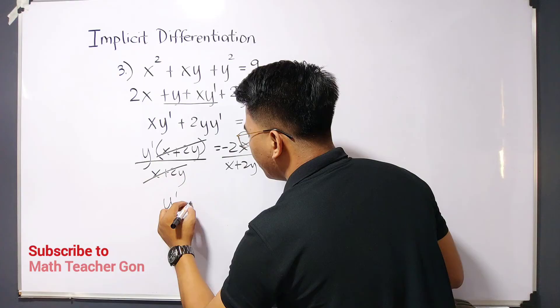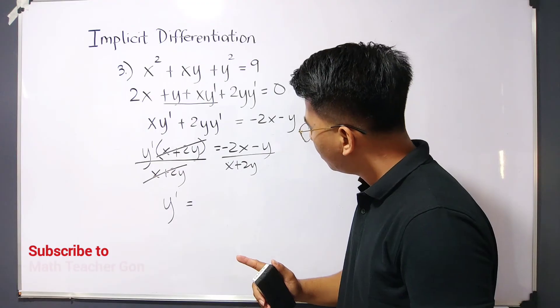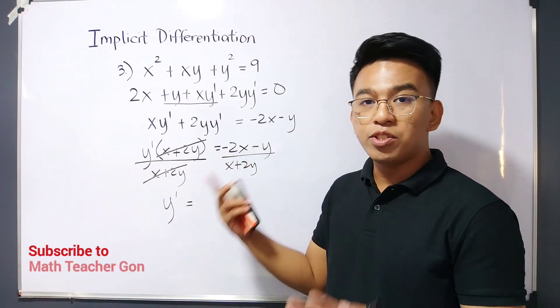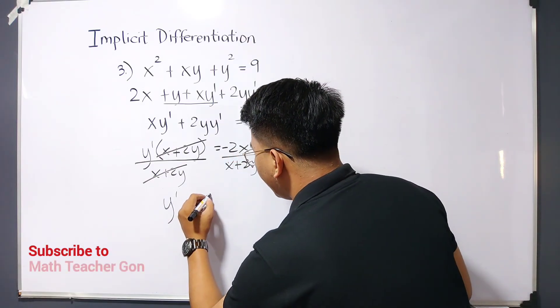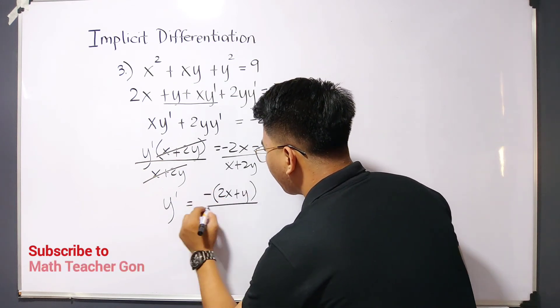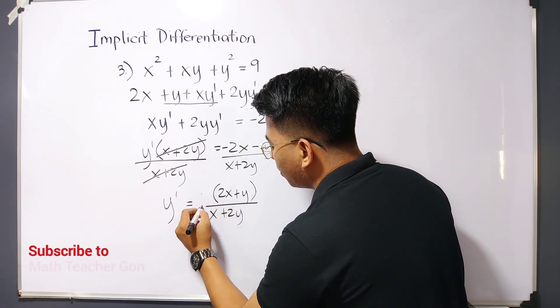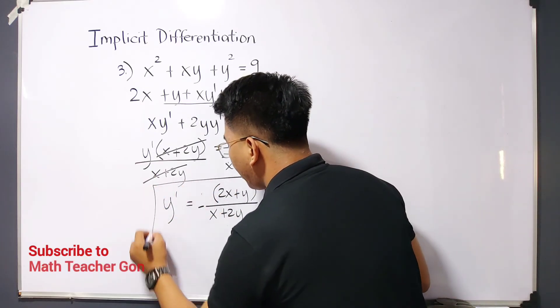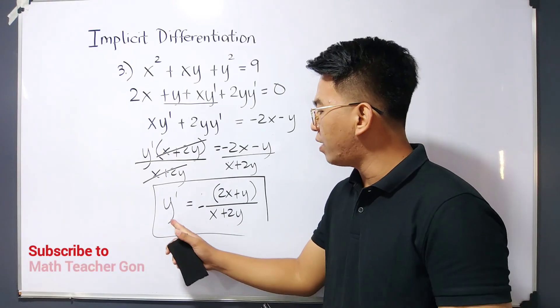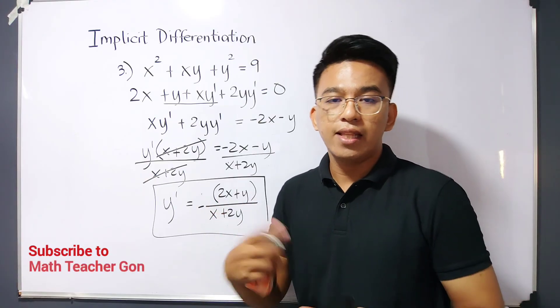Let's check if we can simplify further. To make our answer more simplified, as you can see, our numerator has a common negative sign. We can factor out the negative: negative times (2x plus y) over (x plus 2y). This negative we can place in front. So our answer, the derivation of x squared plus xy plus y squared equals 9, is simply y prime equals negative (2x plus y) over (x plus 2y). That's it guys.